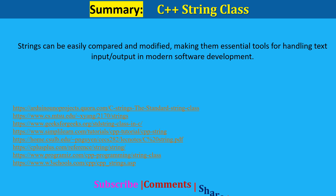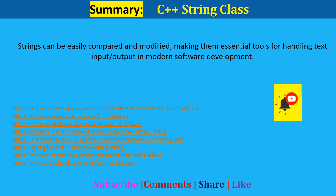The string class in C++ provides powerful features for manipulating text data with ease. Common operations include concatenation, length calculation, character access, and substring extraction. Strings can be easily compared and modified, making them an essential tool for handling text input and output in modern software development.